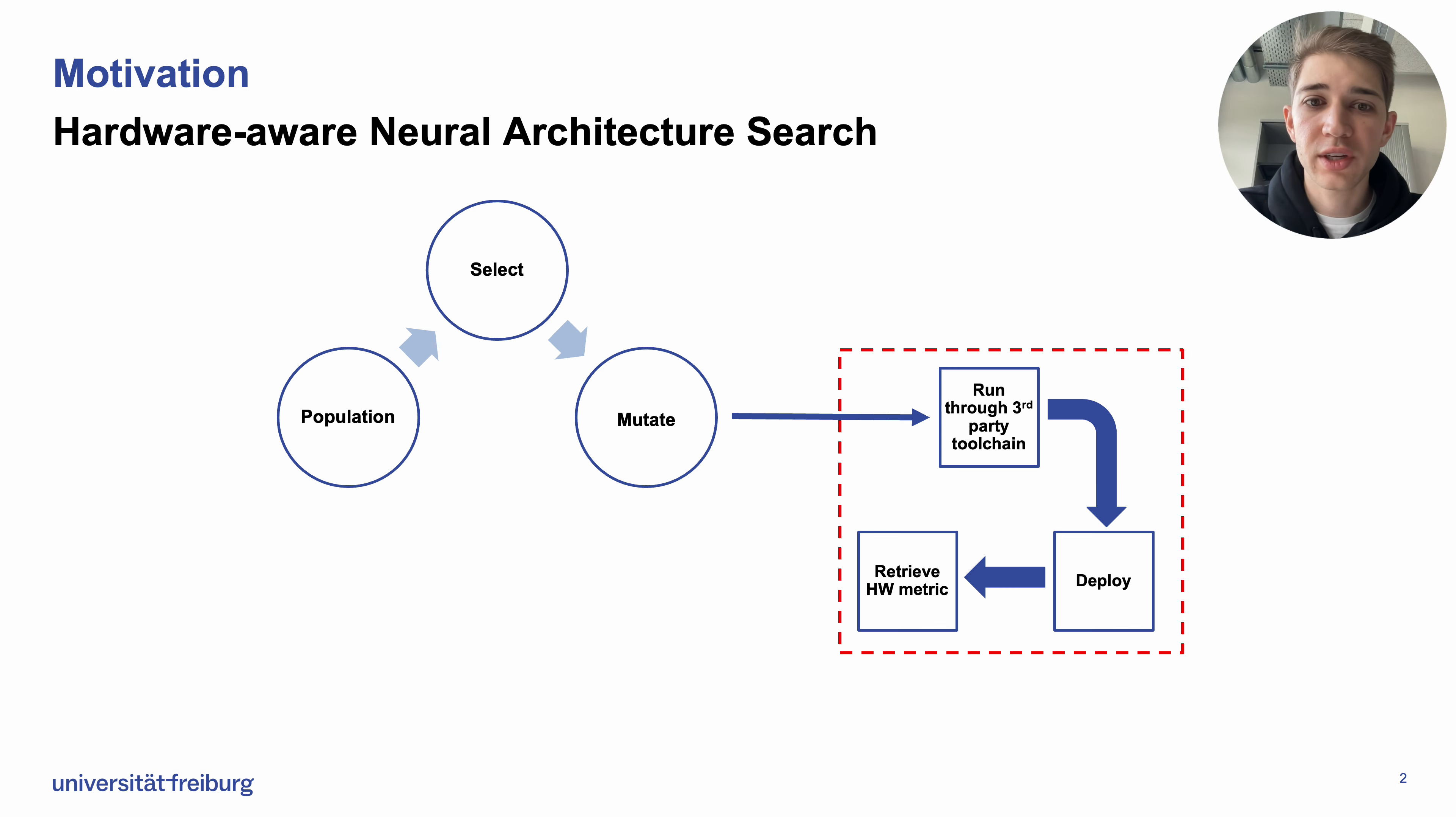The problem is that everything here on the right side is quite time intensive and hard to parallelize, the latter because we might only have a few hardware devices or have to compete with other teams for hardware time. So what we'd like ideally to do is replace this right-hand side with a model that gives us a prediction for hardware metrics instead of having to do this manual process of running through actual devices.